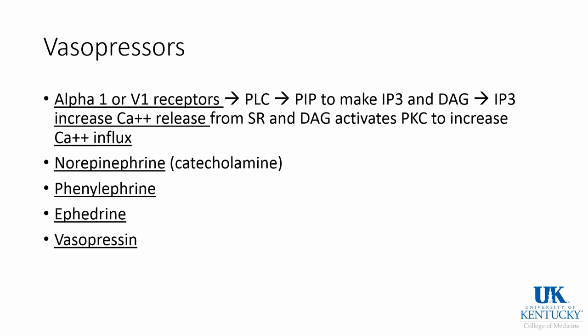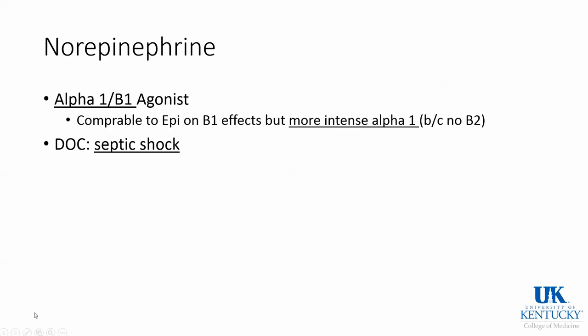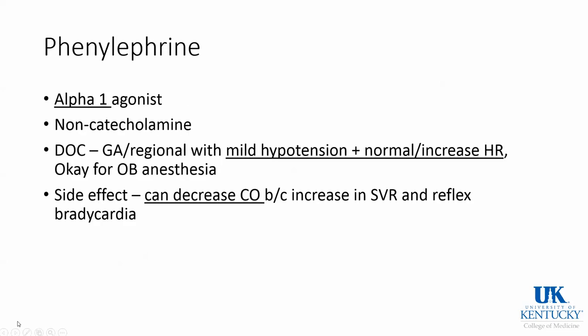Vasopressors are drugs used to help increase blood pressure via alpha-1 and V1 receptors, with a mechanism related to increased calcium release and influx. Norepinephrine is an alpha-1 as well as beta-1 agonist, comparable to epinephrine but more intense with the alpha-1 — it is the drug of choice for septic shock. Phenylephrine is an alpha-1 agonist and is not a catecholamine. It is the drug of choice for mild hypotension in the operating room when you have a normal or higher heart rate. Side effects can include decreased cardiac output because it can increase SVR and cause reflex bradycardia.